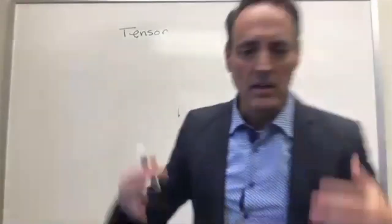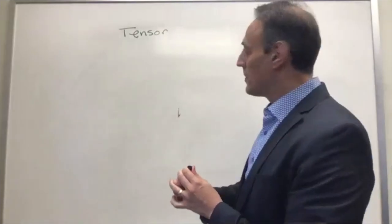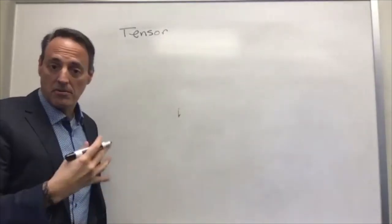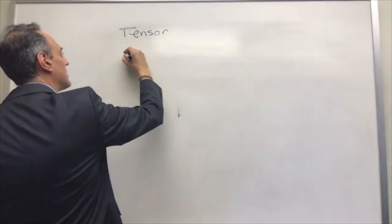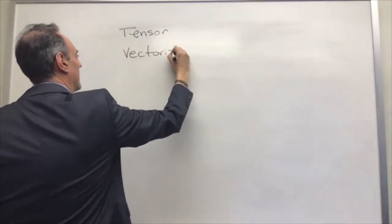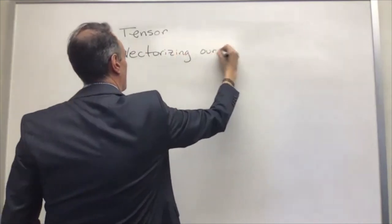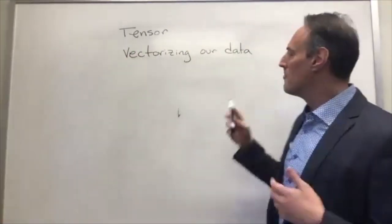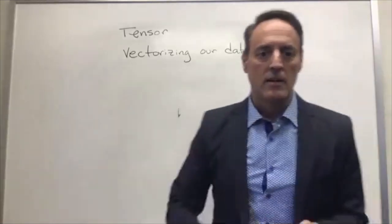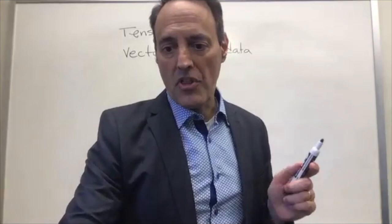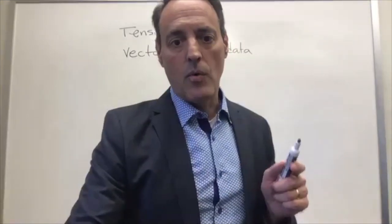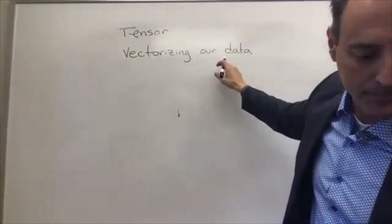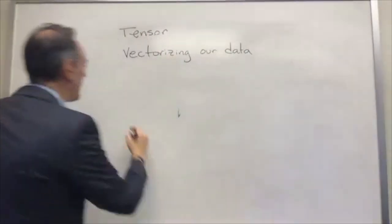We want to talk about this generalization and how do we deal with data. Mostly what we've been doing with data is we've gotten around this tensor idea by doing something we call vectorizing. What we've done is we've taken data and made it fit into matrices by vectorizing that data. That's an important thing I want to highlight here - this is something we just do routinely and we don't talk too much about it. For instance, we could take a data matrix.